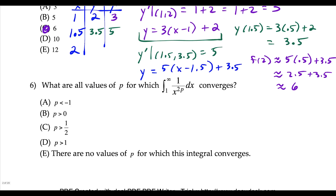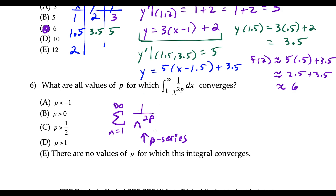Question 6 requires knowing all your convergence tests for series. This looks like the integral test, but it's really a p-series: 1 over n to the 2p. The trap is it's not 1 over n to the p — it's 1 over n to the 2p. The p-series test says the exponent 2p must be bigger than 1, which means p must be greater than 1/2. Note this is specific to this problem where the coefficient of p is 2.